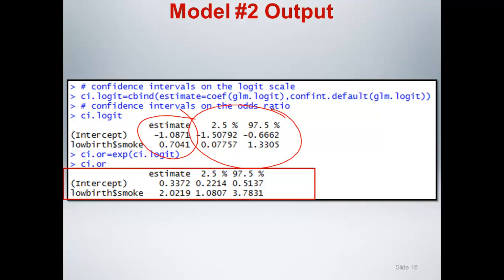So we use the same syntax here to create a CI.logit object that combines the estimates with the confidence intervals on the logit scale. We exponentiate that and we get our odds ratio of 2.02 with a confidence interval from 1.08 to 3.78. So really with essentially four lines of code for a simple logistic regression model, we can generate the estimates, confidence intervals, odds ratios.